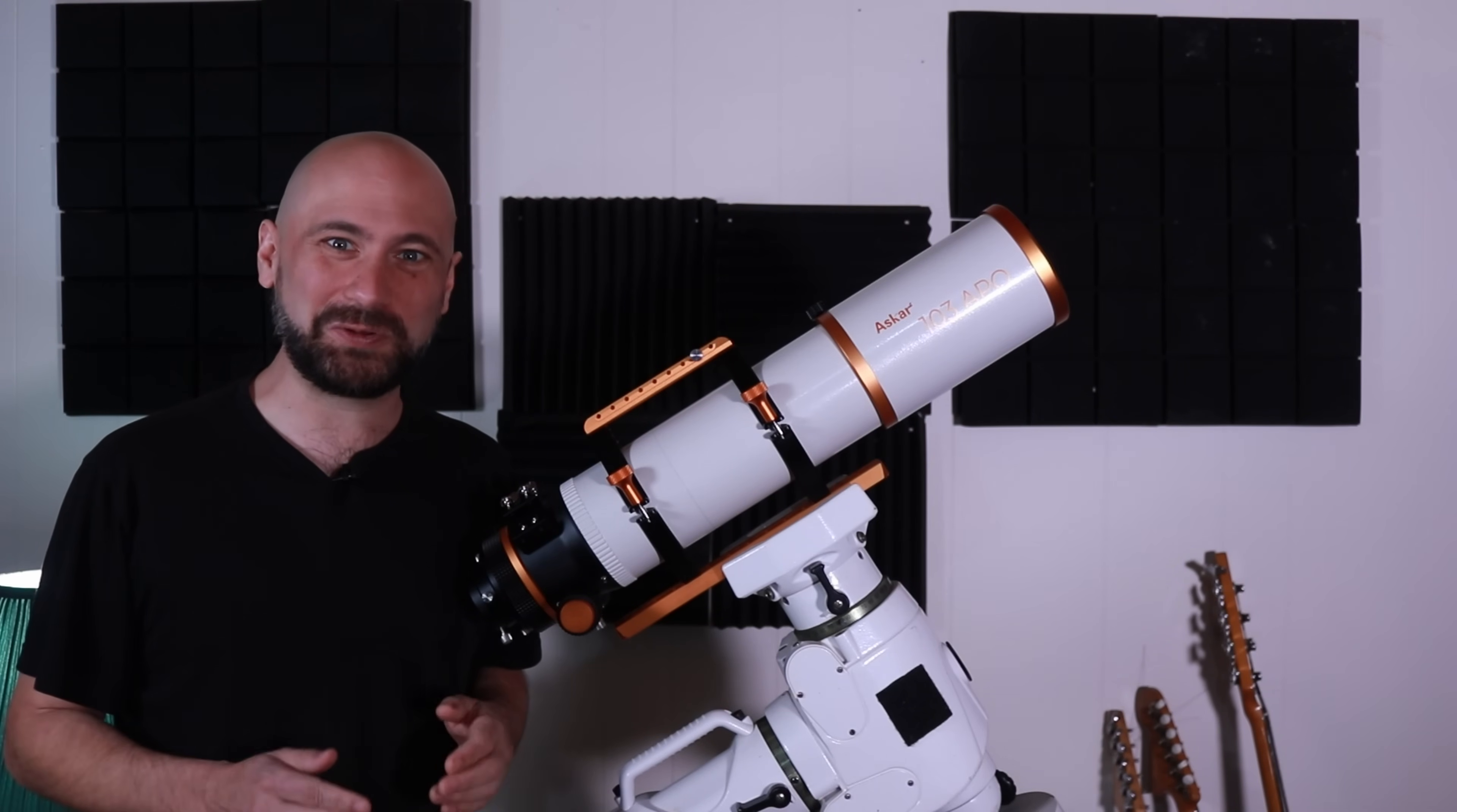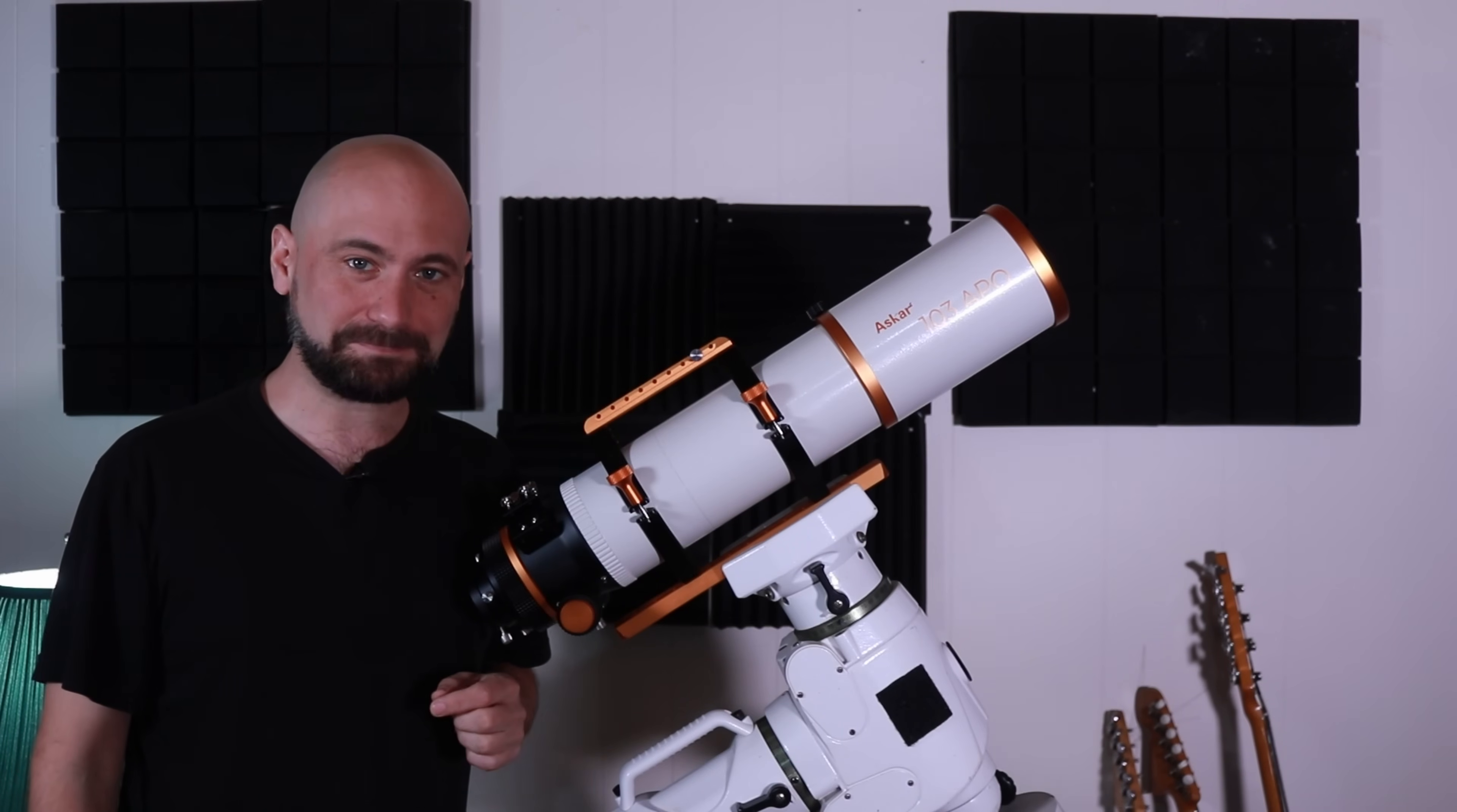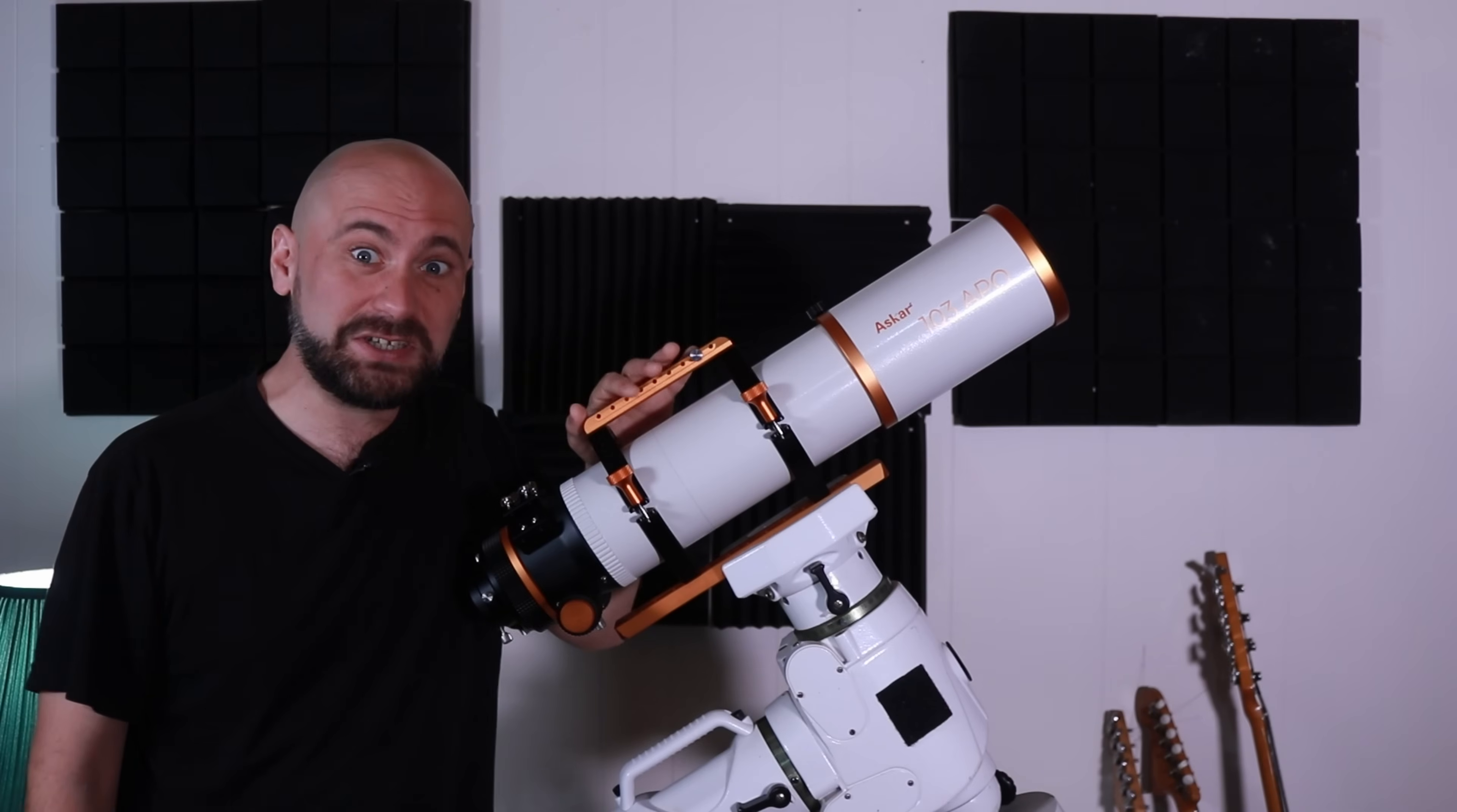It has a native focal length of 700 millimeters and an F ratio of F6.8. Without any accessories, it comes in around 12 pounds, or about five and a half kilograms, so it works with most go-to mounts. And this thing is going for a price of around $1,000.